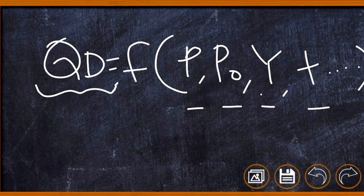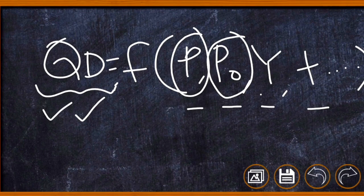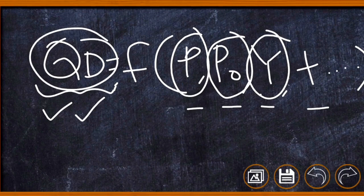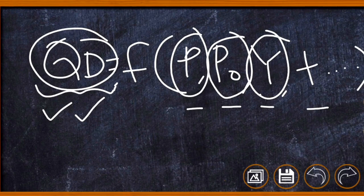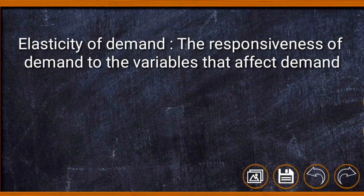When price of the commodity changes, there will be a change in quantity demanded. Similarly, when price of other commodity changes, there will automatically be a change in quantity demanded. When income changes, it also leads to a change in quantity demanded of the commodity. Therefore, variation in all these variables affects the quantity demanded. The term elasticity of demand represents the responsiveness of demand towards the change in other variables.